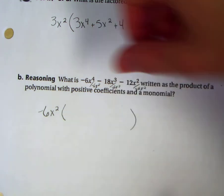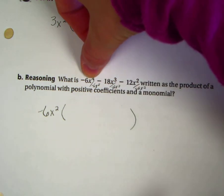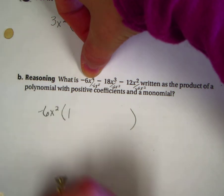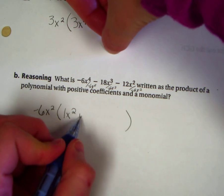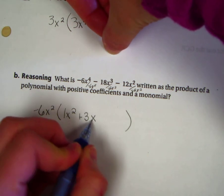Negative 6 divided by negative 6 is a positive 1. x^4 divided by x^2 is x^2. Negative 18 divided by negative 6 is a positive 3 with an x left over.